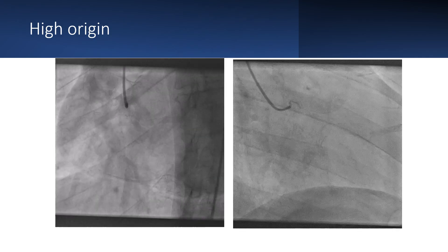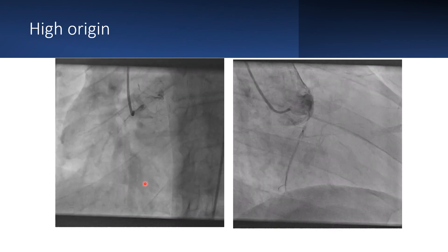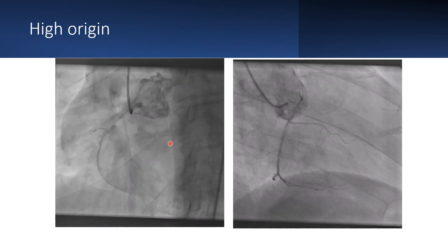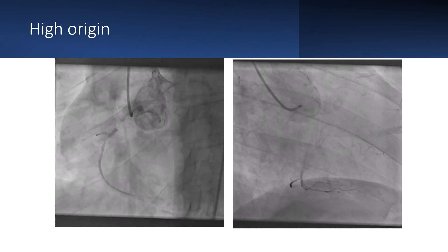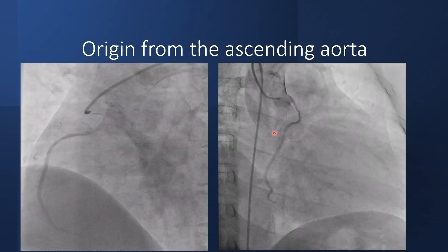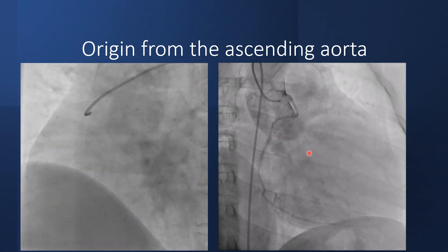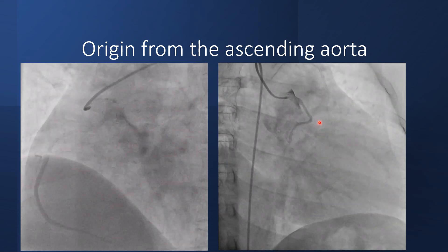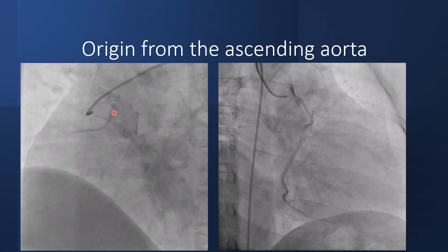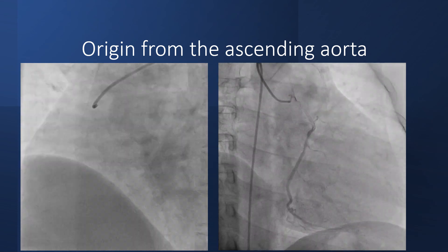Another anomaly is a high origin of the RCA. In this case, the RCA is arising from the sinus of Valsalva but from its upper part. This next case shows the RCA arising from the ascending aorta, not from the sinus of Valsalva. Here is the sinotubular junction and here is the RCA from the ascending aorta — these are the sinuses and the RCA is arising from the ascending aorta.